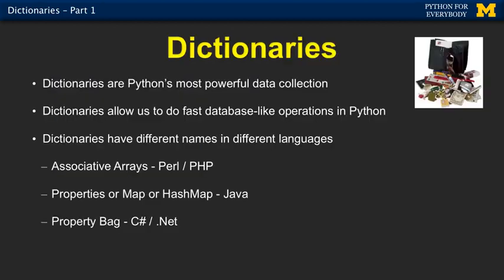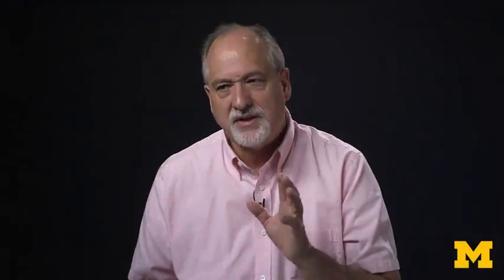Dictionaries are Python's most powerful collection. It's like a little baby database, key value. You look something up, your name and a phone number, or a phone number and a name, but there's a key and a value. This concept of dictionaries has many different names in many languages, like HashMaps in Java or PropertyBags in C Sharp, or associative arrays in Perl or PHP. But they basically are the same thing. They're memory-based key value stores.